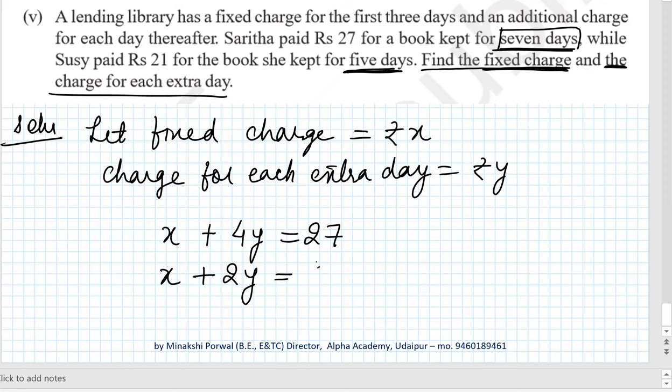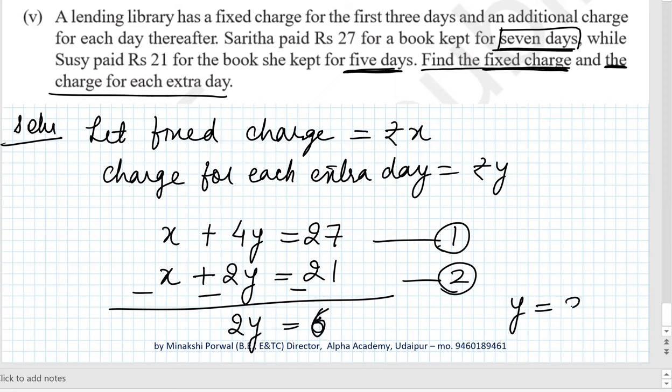Let this be equations 1 and 2. Elimination method will be the best method to solve these equations. Subtracting equation 2 minus equation 1, x and x will cancel. 4y minus 2y equals 2y, and 27 minus 21 equals 6, so 2y equals 6. Therefore, y equals 3.